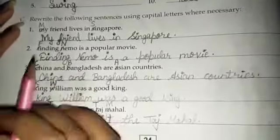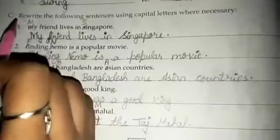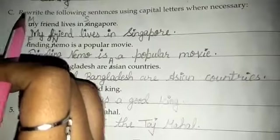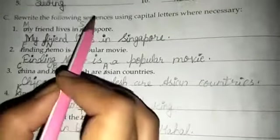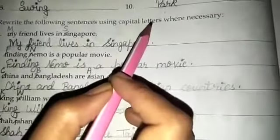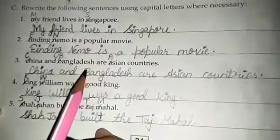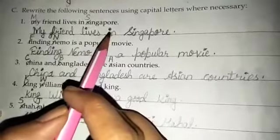Now we move on to our next exercise. Question number C. First I am going to read out the question for you all: Rewrite the following sentences using capital letters where necessary. Here are some sentences given to us. We just have to rewrite the given sentences by using capital letters.